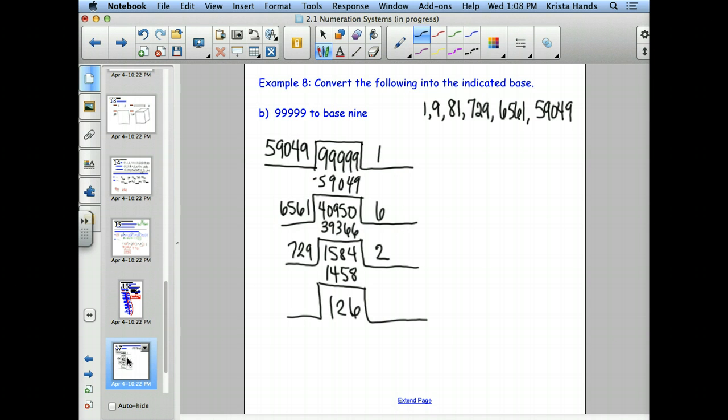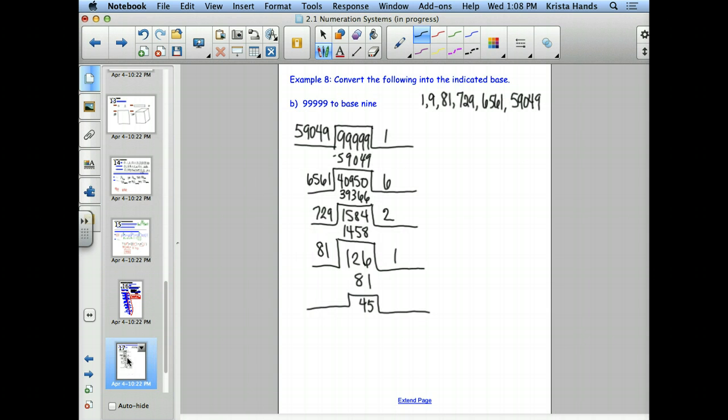So then we're going to divide by 81. 81 will go in just once. So we'll do the 81. And what's 126 minus 81? 45. And then we'll divide by 9. And 9 actually goes into 45 evenly. It gives me 5.